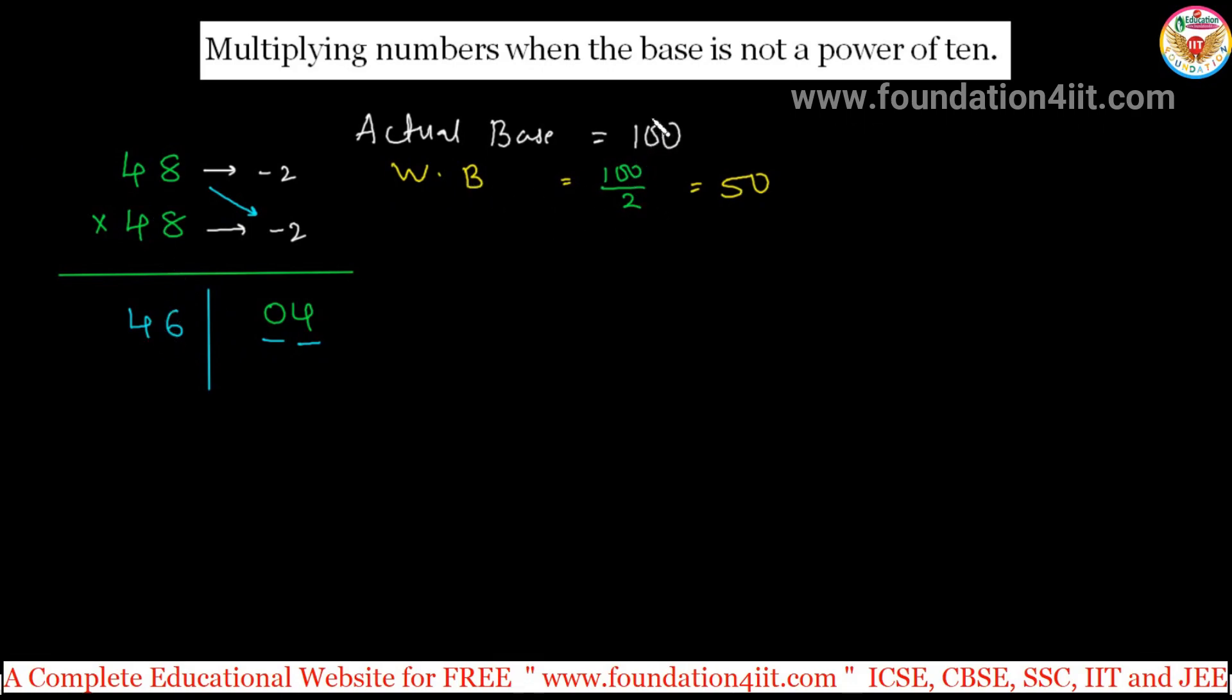But 4604 is not the original answer. Here 46 we got. Actually, working base from main base, how we got 50? Divide by 2. Now, same whatever we got here, just divide by 2. So 46 divide by 2 is 23. And this side is same, 04. Only the LHS part we do this calculation. So 50 is coming by dividing 2 with 100, so same answer should be divided by 2. 48 into 48 is 2304.